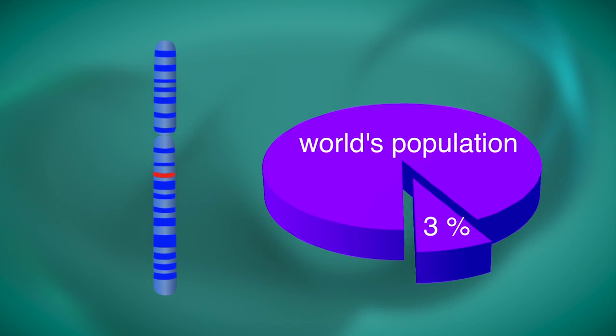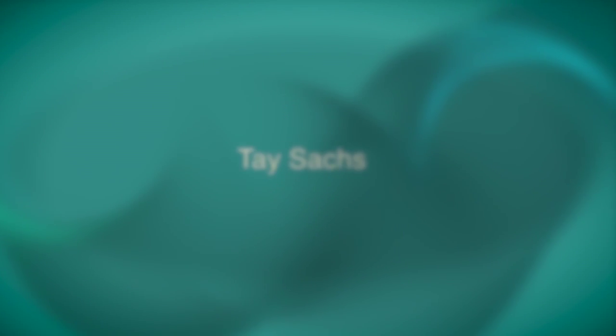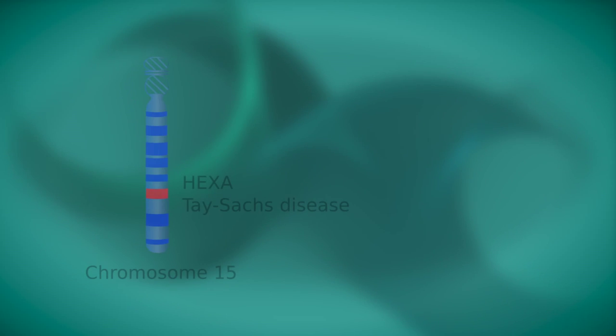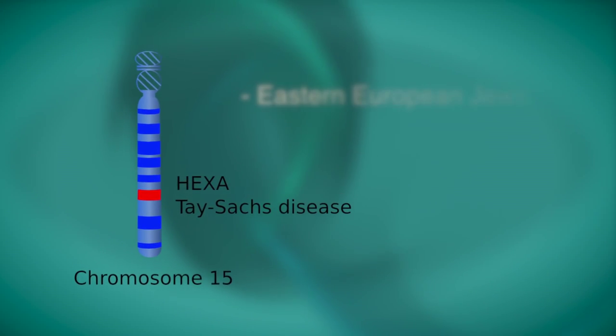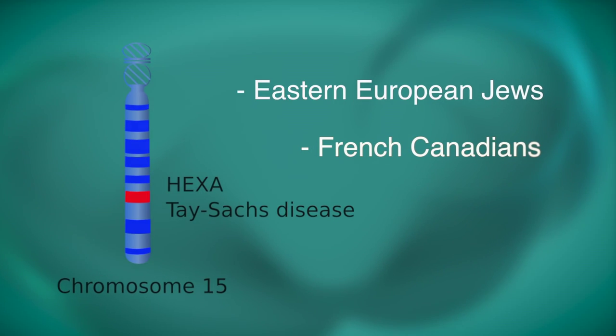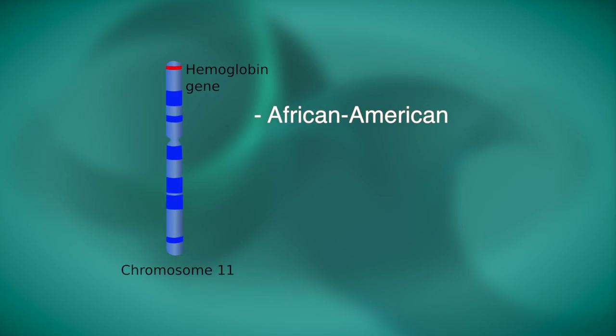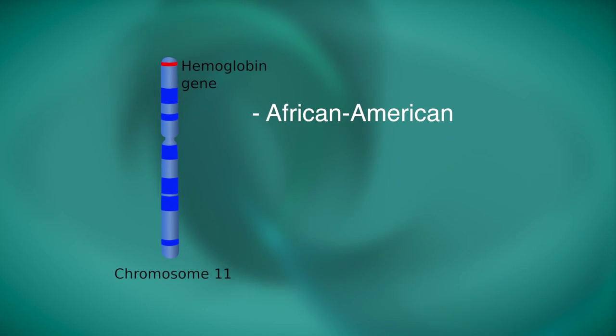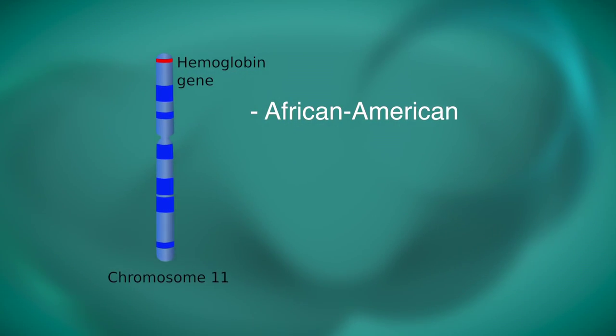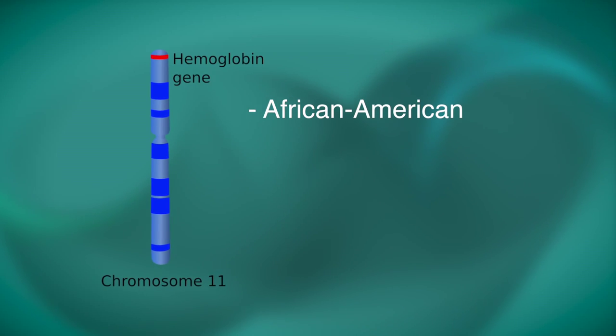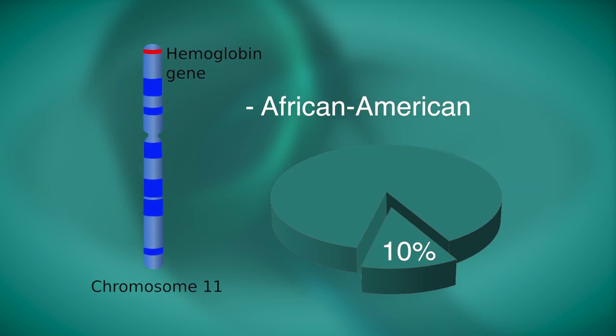Other ethnic hereditary diseases include Tay-Sachs. This disease has a high incidence in Eastern European Jews and French Canadians. Sickle cell disease. Anyone with African-American ancestry should be screened via hemoglobin electrophoresis for carrier status of this disease, as one in ten may be a carrier.